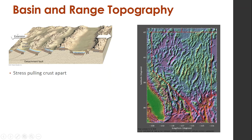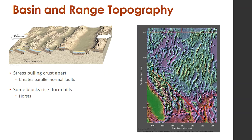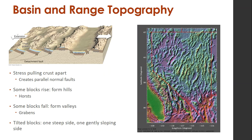These faults can create what's called basin and range topography. In Nevada, the stress of the crust pulling apart creates these parallel normal faults. Some blocks rise to form hills called horsts, and some blocks fall to form valleys called grabens. You get tilted blocks with one steep side and one gently sloping side — a huge part of the topography in Nevada. So next time you drive through Nevada, you can notice this landscape.